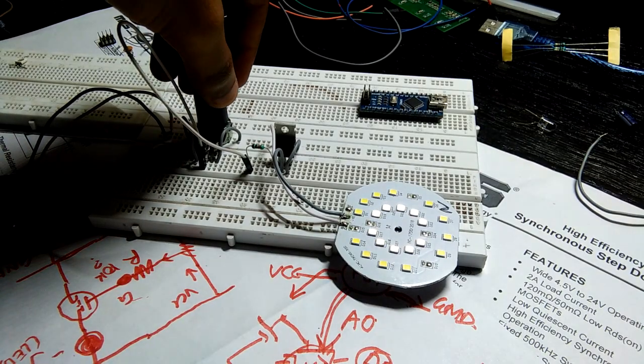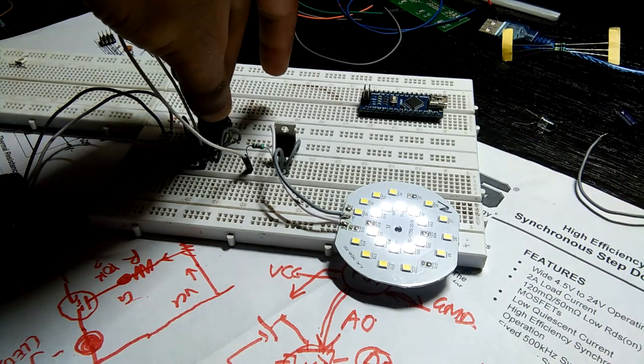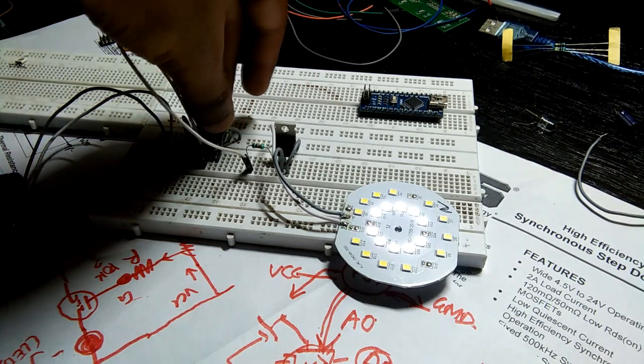So as you can see, our minimal MOSFET as switch setup is working. Now let's see how to implement this setup to a microcontroller.